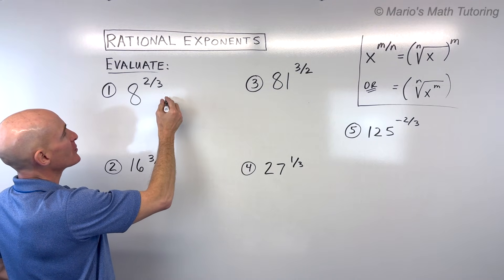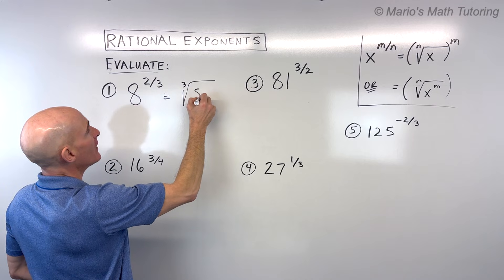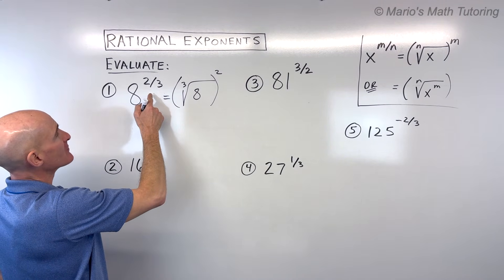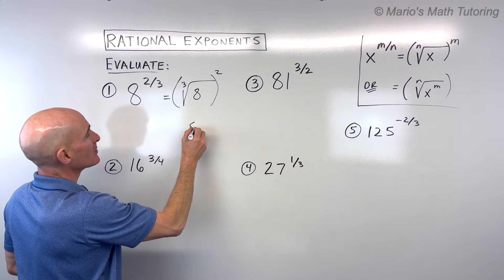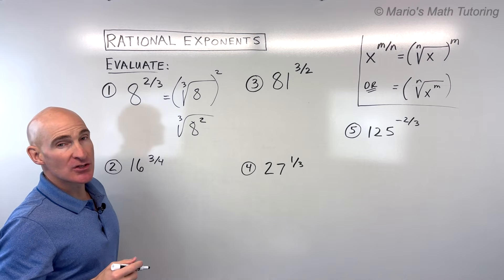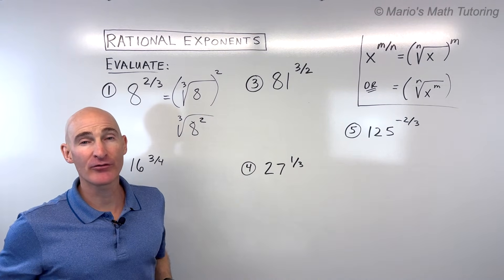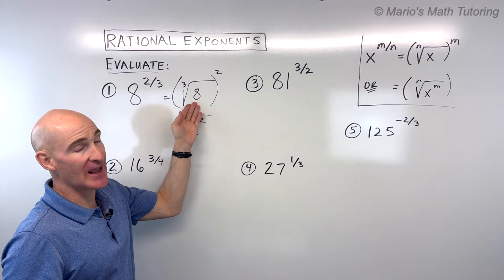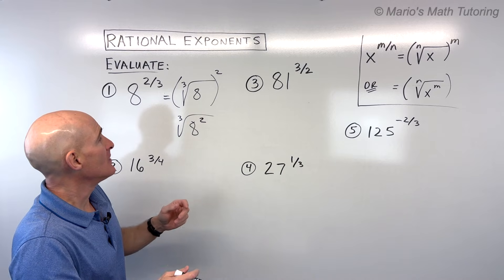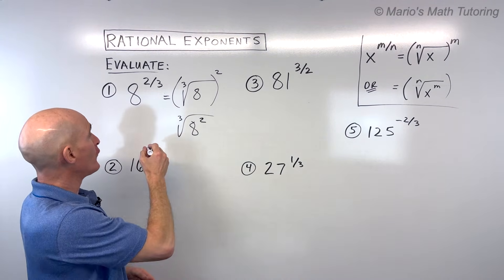With 8 to the two-thirds, I could think of this as the cube root of 8 squared, or I could think of this as 8 squared first and then take the cube root. The cube root of 8 asks what number multiplied three times gives 8. That's 2, because 2 times 2 times 2 is 8. So 2 squared is 4.